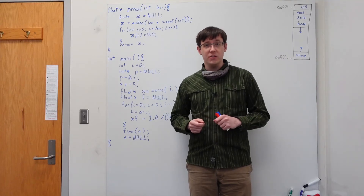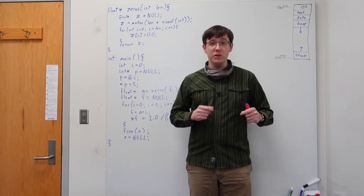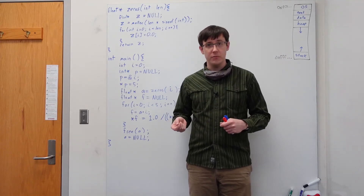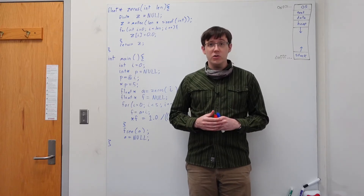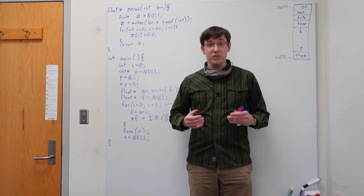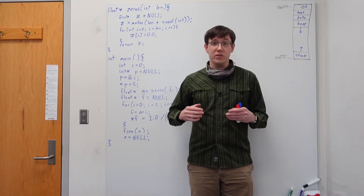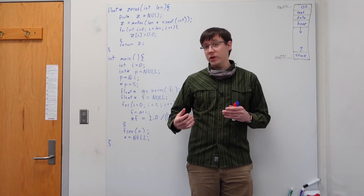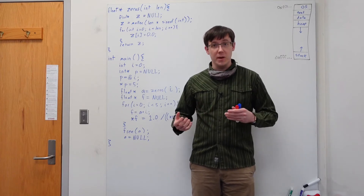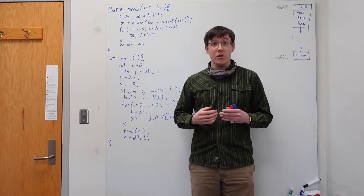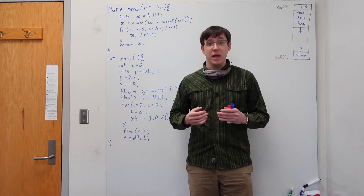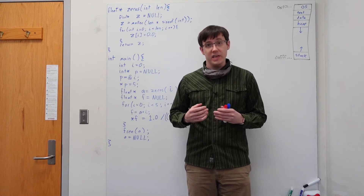In the last video, we saw lots of new ways we could use pointers in our C programs. In this video, I want to draw some stack diagrams to help us reason about what's going on when we use pointers to access various things in memory, and when we allocate and deallocate dynamic memory on the heap.